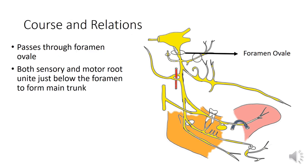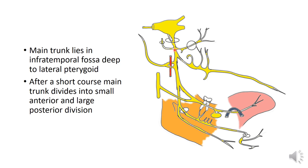Moving on to course and relations: both roots — the sensory root and motor root — exit the skull by passing through foramen ovale. Just below the foramen, both roots unite to form a single trunk called the main trunk of the mandibular nerve. The main trunk lies in the infratemporal fossa, deep to the lateral pterygoid muscle. After a very short course, the main trunk divides into a small anterior division and a large posterior division.